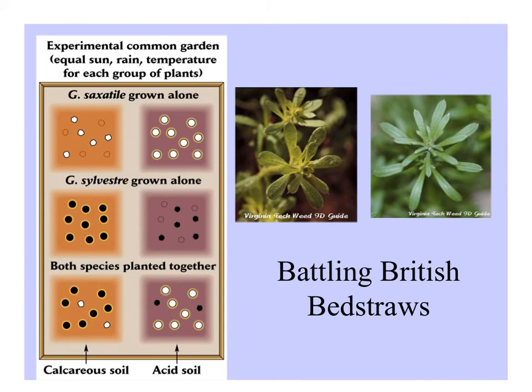Here's the experimental design used to study these battling British bedstraws. In a common garden with equivalent sun, rain, and temperatures for all plants, growing them alone, both species persist in both soil types. But in acid soil, only one persisted; in calcareous soil, only the other.